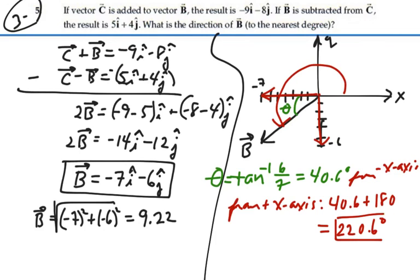That's the sure way to find the angle. Find it from the nearest point using positive values, then define it from some other point. In this case, from the positive x-axis. So it's 220.6 degrees from the positive x-axis.